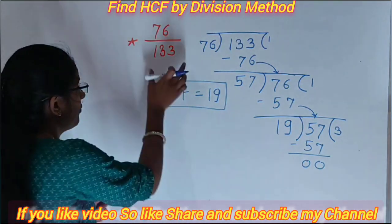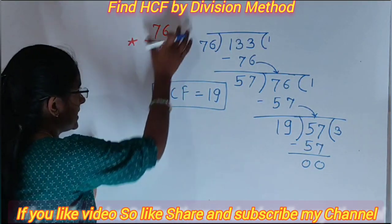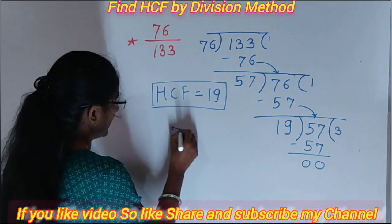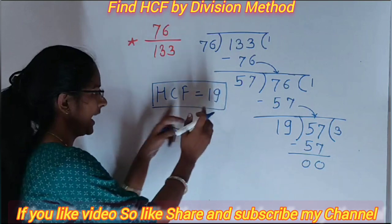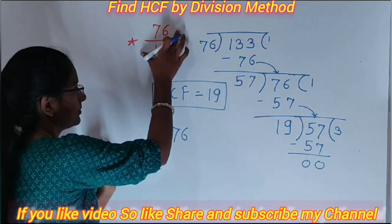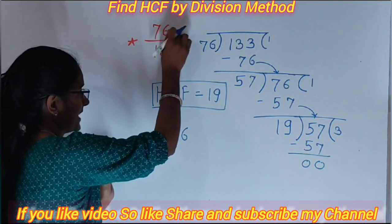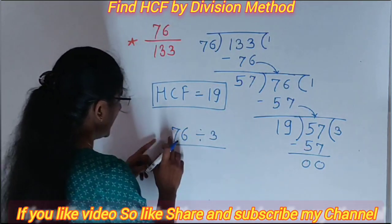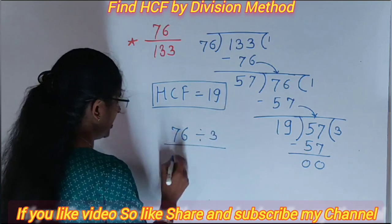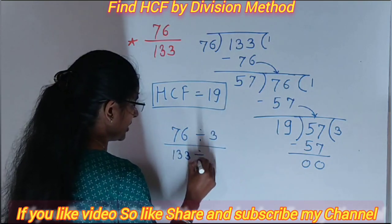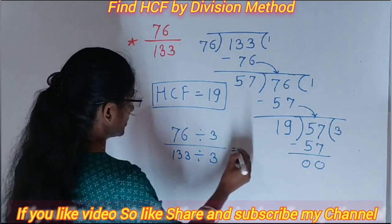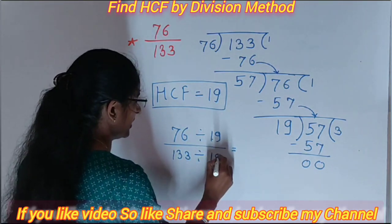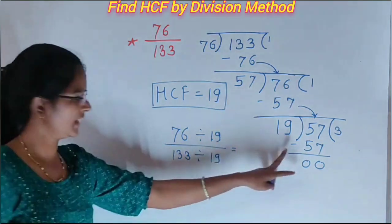Then again we try to simplify this or find the simplest form of this question. For that we divide 76 and 133 by the HCF. That's why we write down 76 divided by 19 because our HCF is 19.